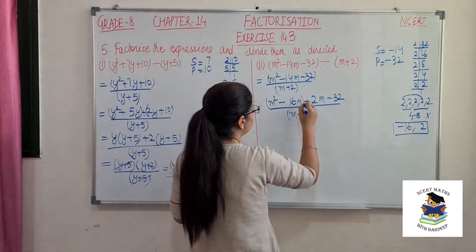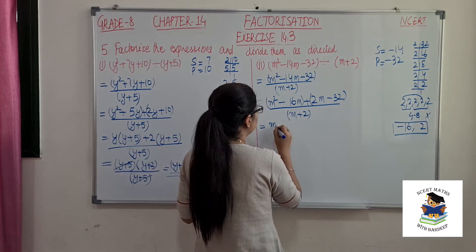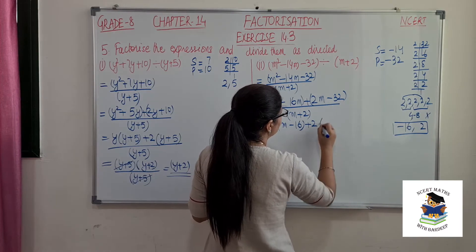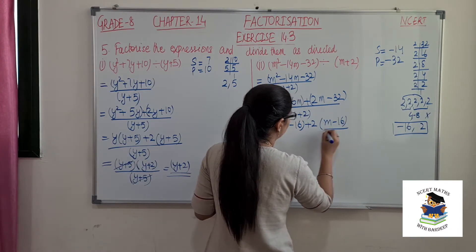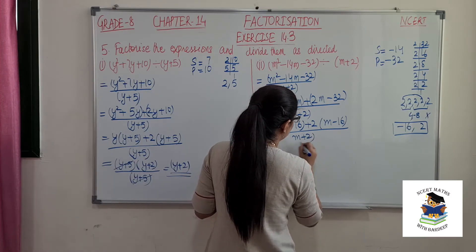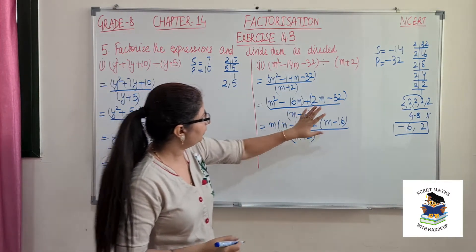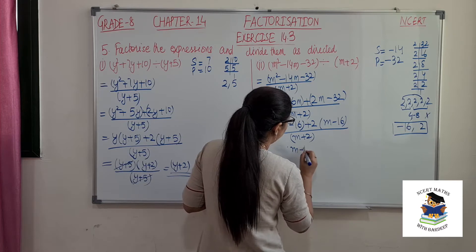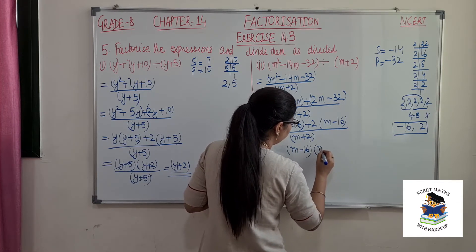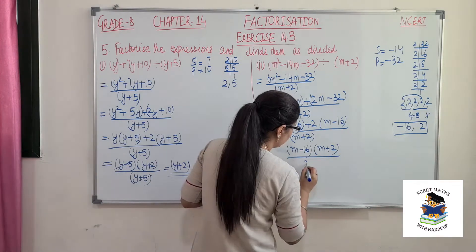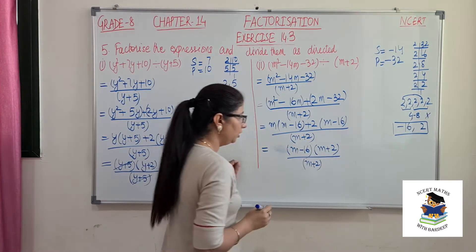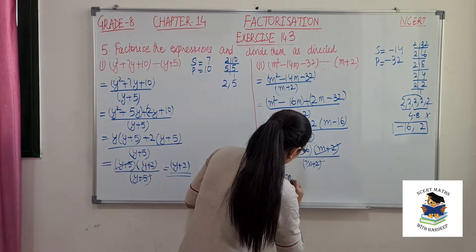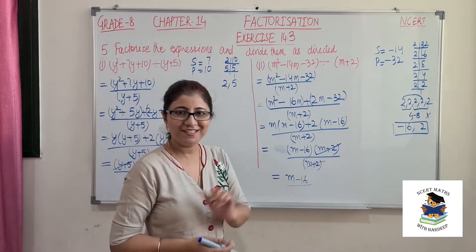We regroup: from the first two terms, m is common giving m(m minus 16). From the last two, 2 is common giving 2(m minus 16). So (m minus 16) is the common factor, giving (m minus 16)(m plus 2) over (m plus 2). Cancelling m plus 2, our answer is m minus 16.